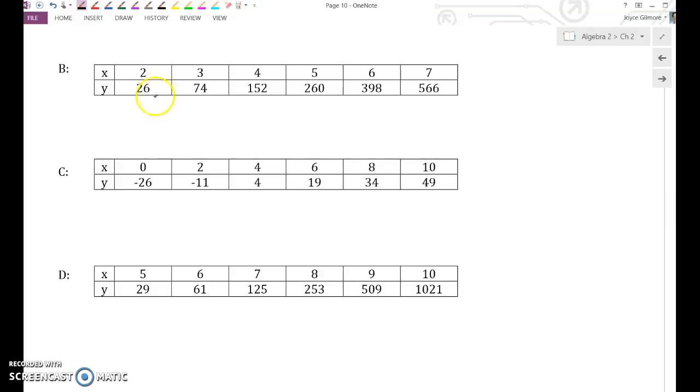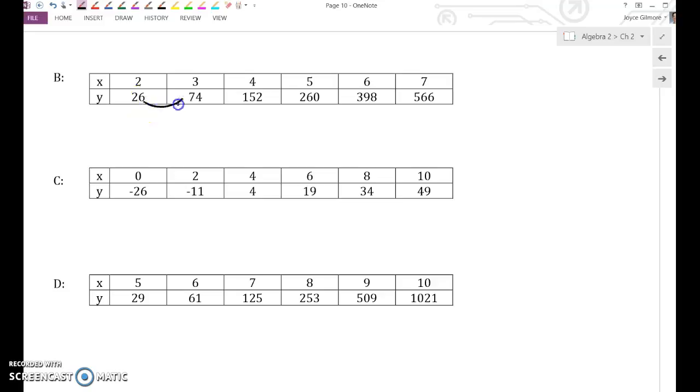Now let's look at our y's. How would you get from 26 to 74? Add 48. How would you get from 74 to 152? If you don't know, do 152 minus 74. It's adding 78. From 152 to 260, you can do 260 minus 152, it's adding 108. The next one is adding 138. And the next one is adding 168. So is this function a linear function? No. The first level is not the same. So it is not linear.